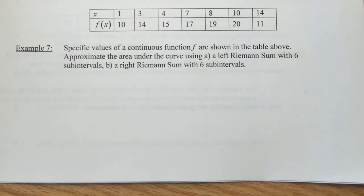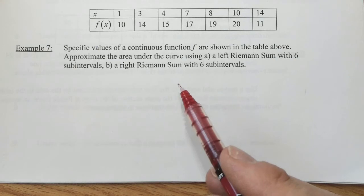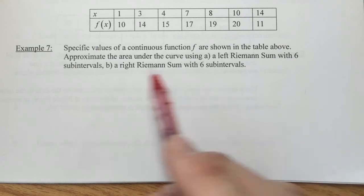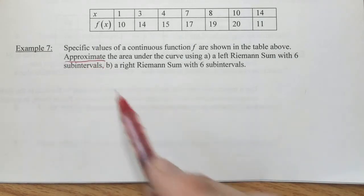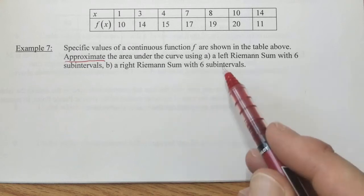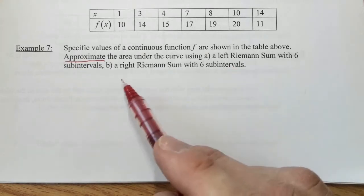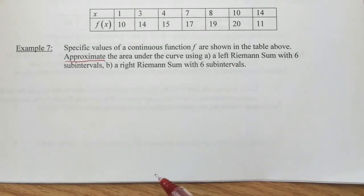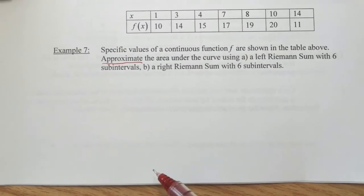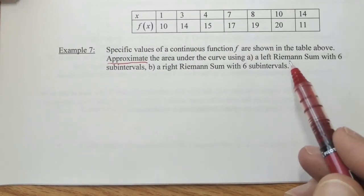Let's solve example seven. We are looking to approximate, because a Riemann sum is an approximation, the area under the curve using a left Riemann sum with six subintervals and then a right Riemann sum with six subintervals. So what's happening with example seven, let's go to part A first, the left Riemann sum.